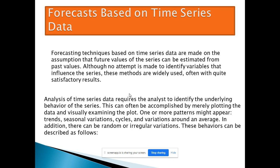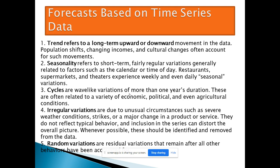Forecast based on time series data depends on historical data. For example, you can take four to five years of historical data — the last year, every month and every quarter, and previous months and quarters — to see how it is affected season-wise, month-wise, or quarter-wise. Based on the time series data, you can see what type of trend and what type of graph is showing.